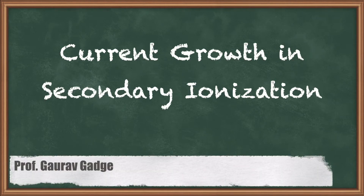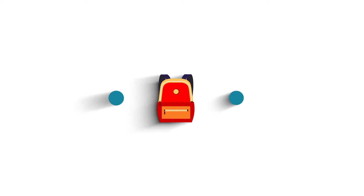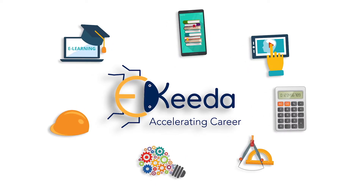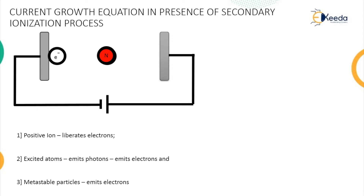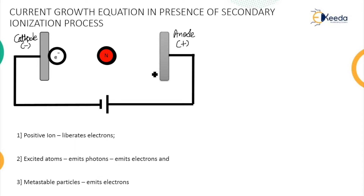Now I'm going to start with our next topic: current growth equation in presence of secondary ionization process. The secondary ionization process was already discussed in the last class. Here we have to derive the current growth equation under that process, considering the same circuit having two electrodes separated by a distance d. The photon energy which falls on the cathode releases electrons — let that number of electrons be n0.